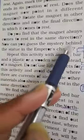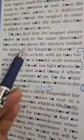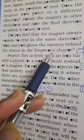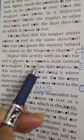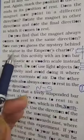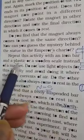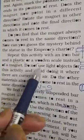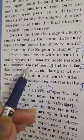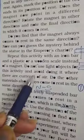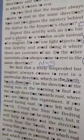Now can you guess the mystery behind the statue in the emperor's chariot? Repeat this activity with an iron bar or a plastic or a wooden scale instead of a magnet. Do not use light objects for this activity and avoid doing it where there are currents of air.